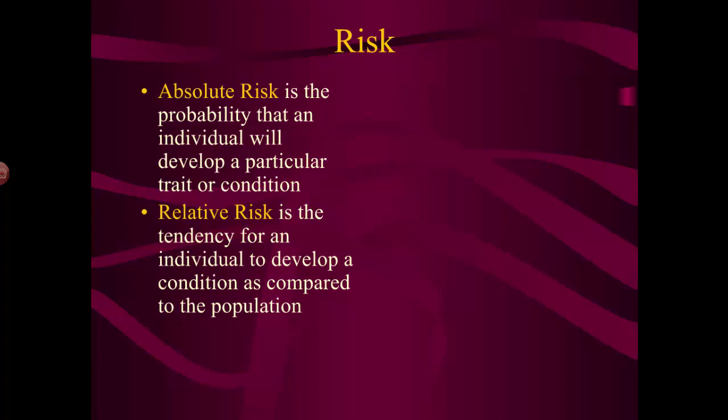If individuals belong to certain populations — in the case of Tay-Sachs disease, Ashkenazi Jewish people, people of Ashkenazi Jewish descent, Eastern European Jews — they have a much higher risk because of their population, the environment that population developed in, and other genes and factors that were passed down. So when you look at your overall risk, you have to consider both: your specific genetics — your absolute risk — and what population you belong to.